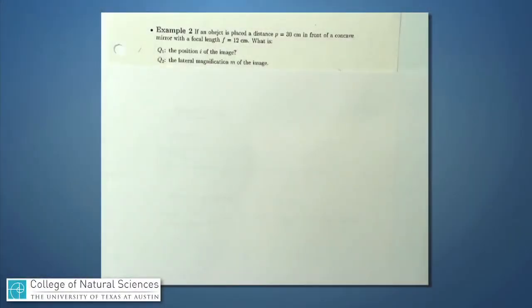I'd like to work through another example now, which reads: If an object is placed at distance p equals 30 centimeters in front of a concave mirror with focal length of 12 centimeters, what is the position i of the image and the lateral magnification M of the image?